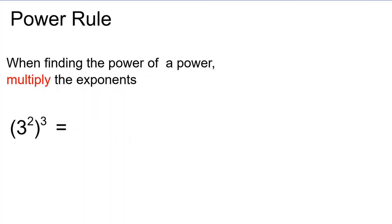So for this one, we're going to multiply our exponents together. So we have 3 to the power of 2 times 3, which equals 3 to the power of 6. If we put that into our calculator, you should get 729 as your final answer.